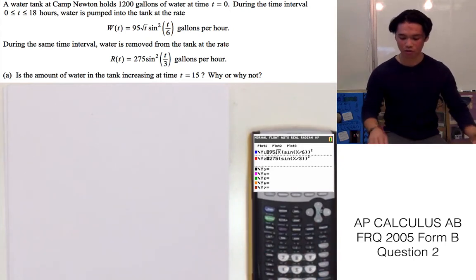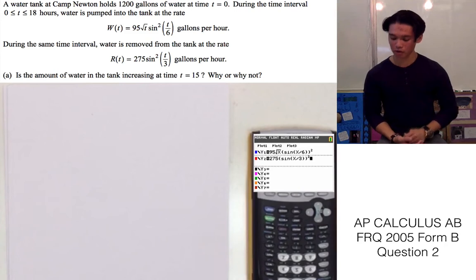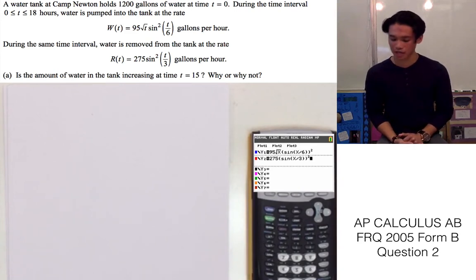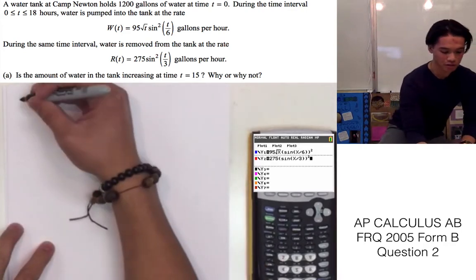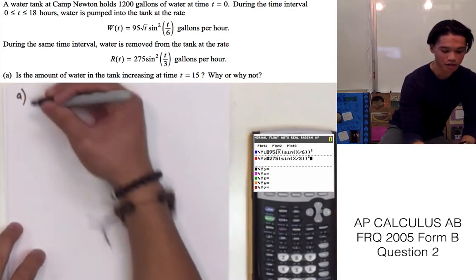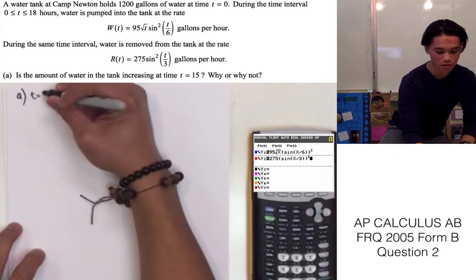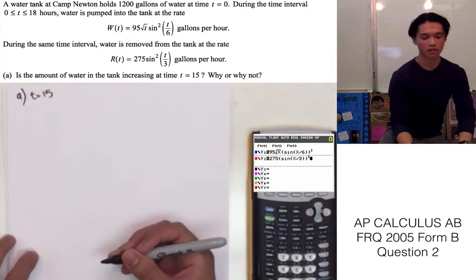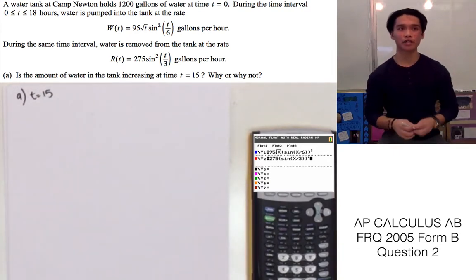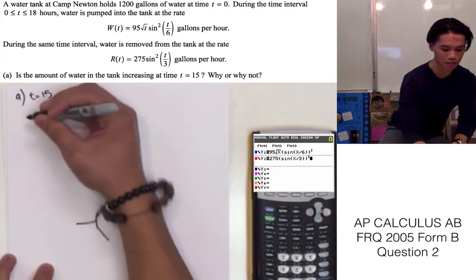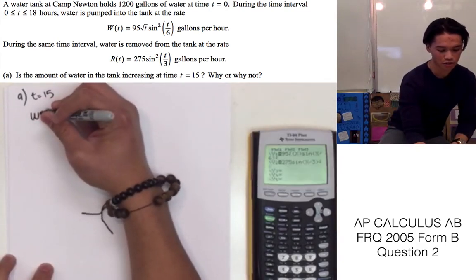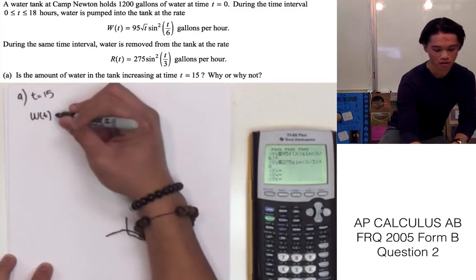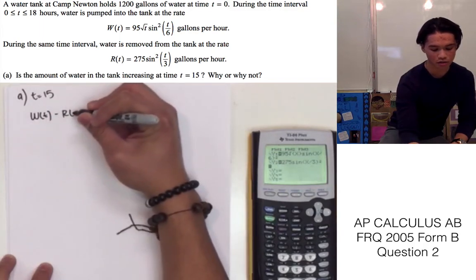Now we can go ahead and go into Part A. Part A says: is the amount of water in the tank increasing at time t equals 15? Why or why not? So let's start writing Part A at t equals 15. For the total rate of the total amount of water in the tank, we will represent it by W of t minus R of t.